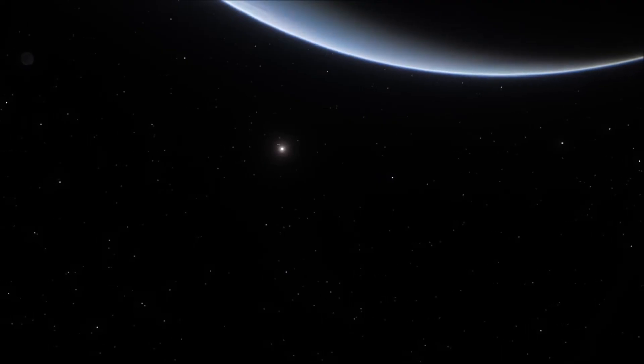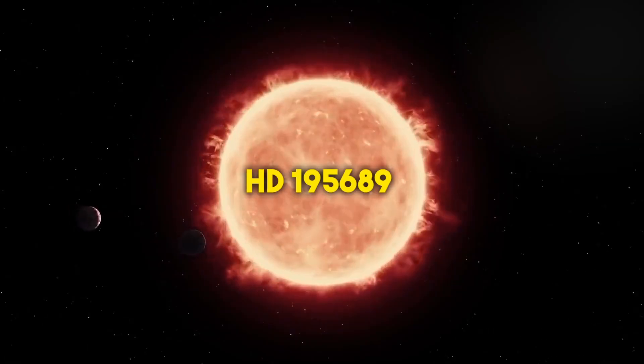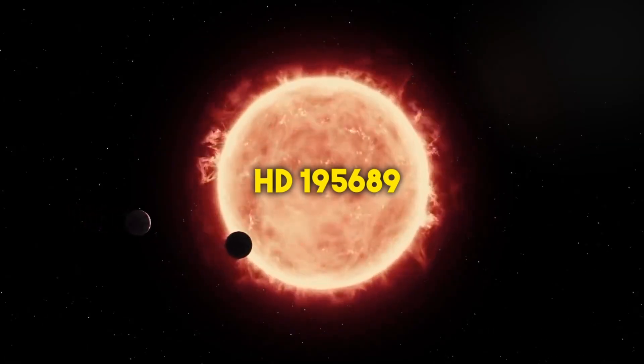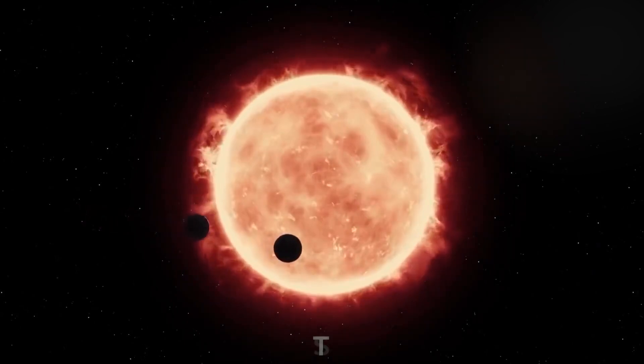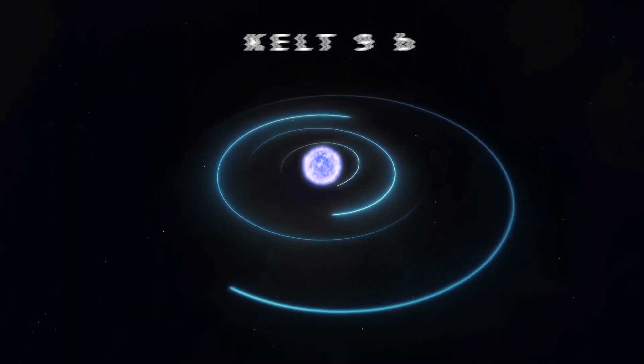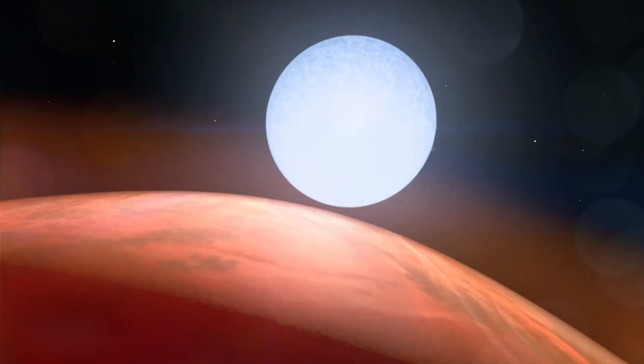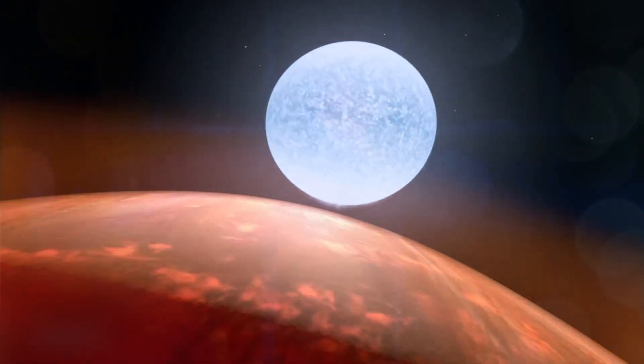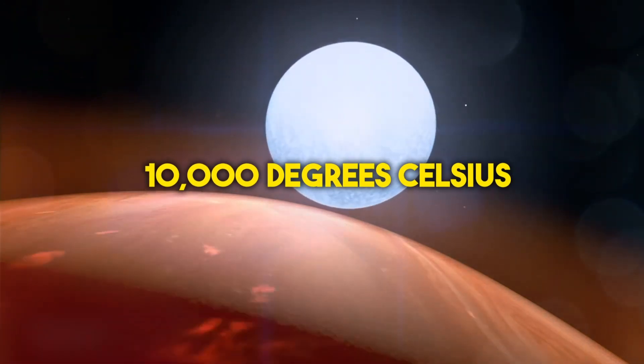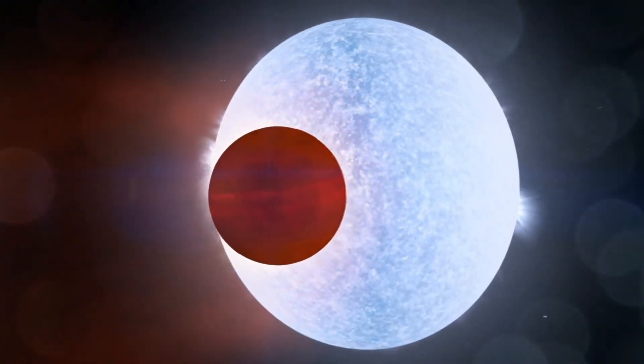But hold on to your space helmets, because we're not done yet. There's a stellar twist. Enter HD-195689, also known as the fiery KELT-9, a star 2.5 times more massive than our sun. This cosmic furnace burns with such intensity that its surface temperature reaches a staggering almost 10,000 degrees Celsius.